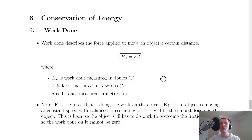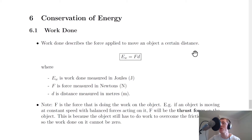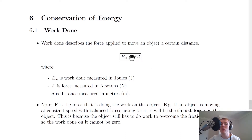The first topic is work done. Work done describes the force applied to move an object a certain distance. So if you have an object and you move it a certain distance by applying a force, then there must be an energy associated with that to cause the object to move in the first place.